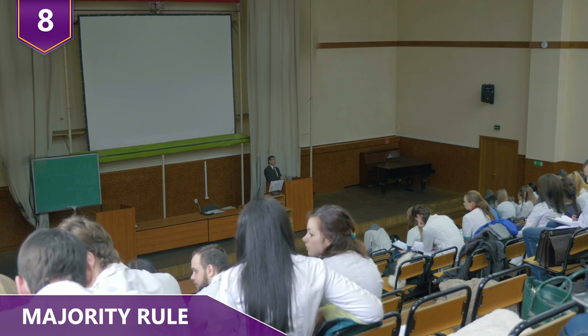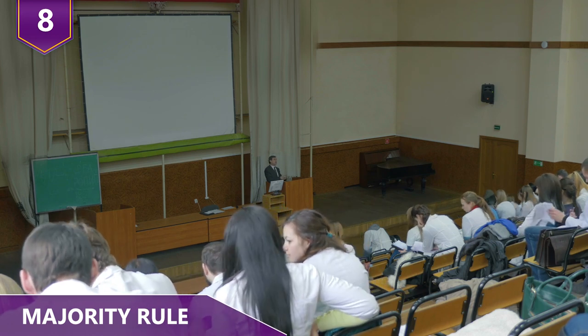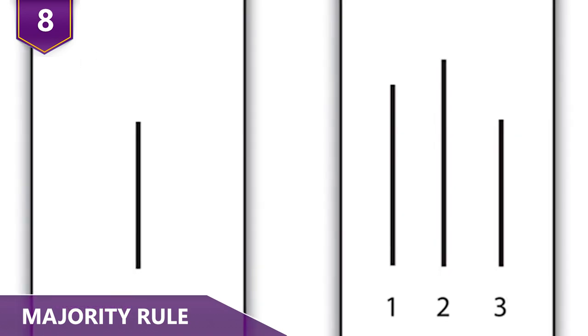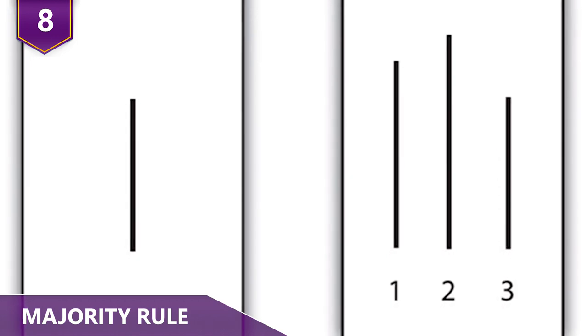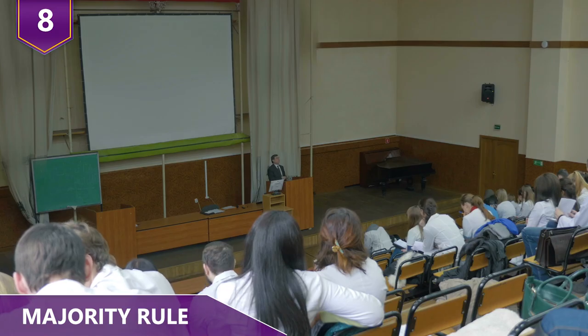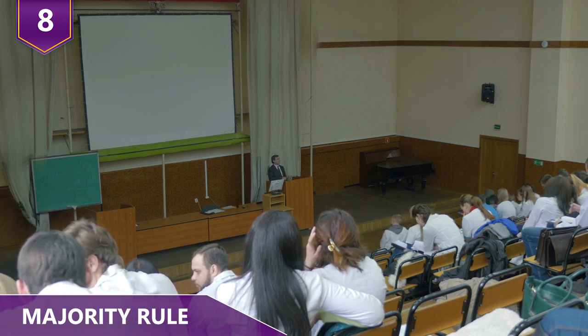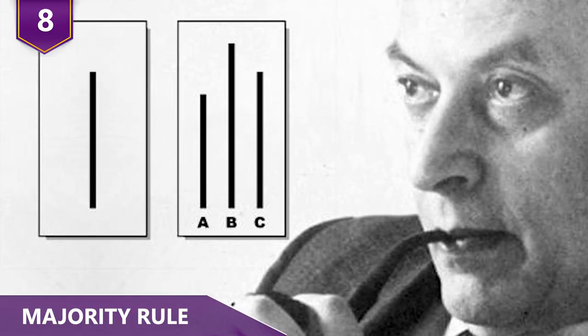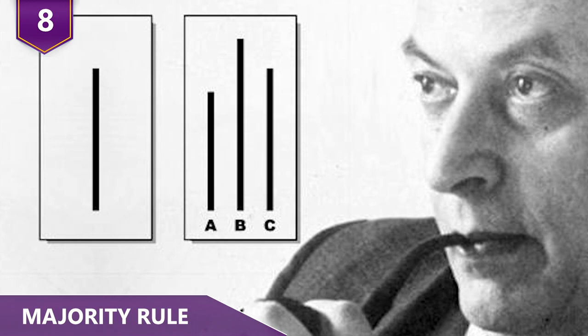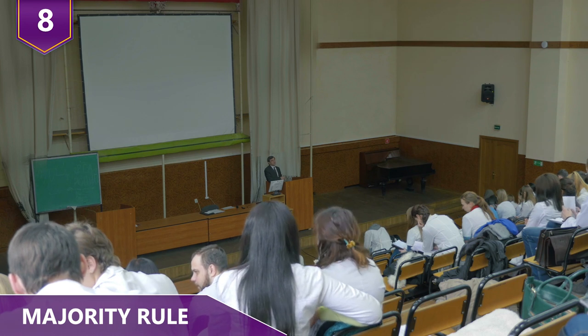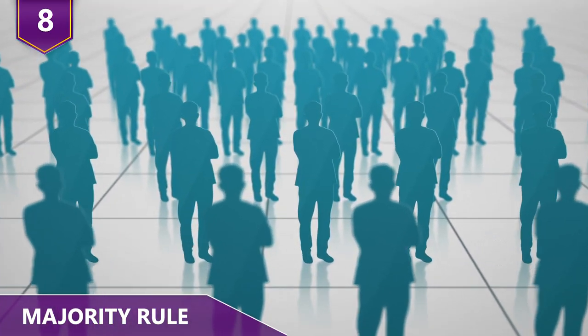They're actors in the experiment, and their behavior is carefully scripted. You and the rest of the participants are shown a line segment drawn on a piece of paper, then each person is asked to choose the line segment that's the same length from a group of three lines. Each person gives their answer out loud, and they all choose the line you thought was shorter than the original. The Asch experiments concluded that a person will tend to agree with the majority if they believe they're among equals. According to Asch, at least one third of the time, you'll just conform to the group.